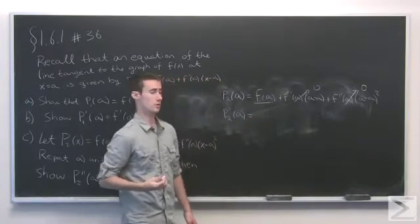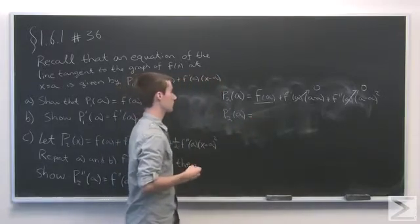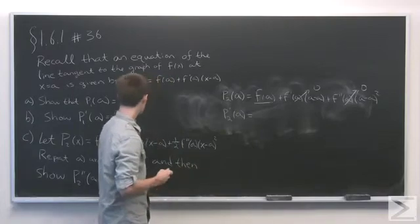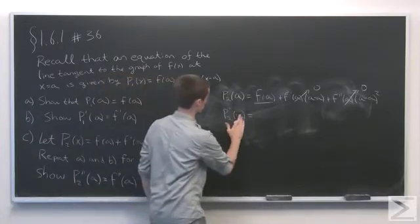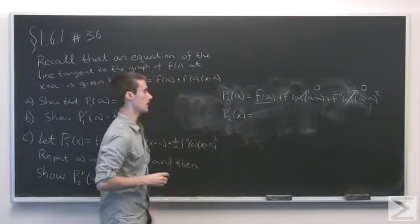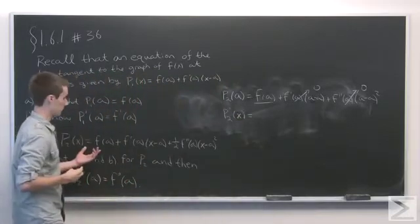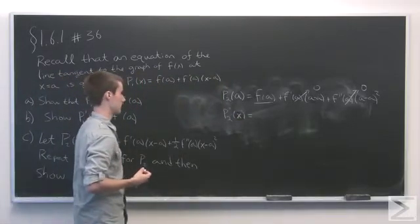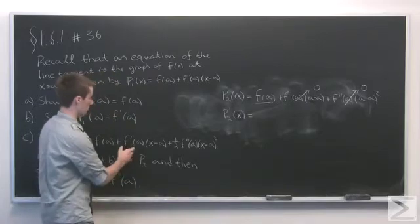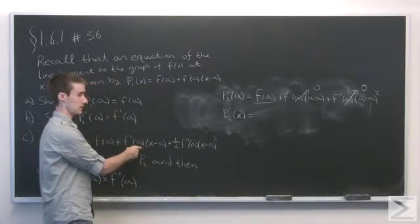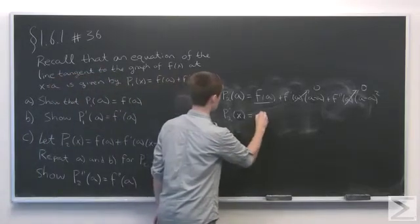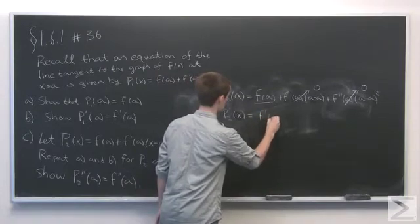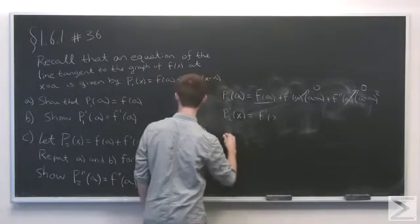Next, we compute the first derivative of p2 evaluated at a. So we see, let's actually just do the derivative in general, and then we'll substitute in a. So the first term is just a constant, it goes to zero. And the second term, if we multiply through, we'll have f'(a) times x, which when we take the derivative, we'll just end up with f'(a).